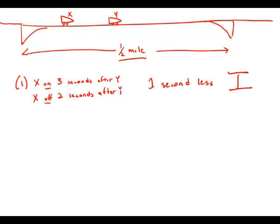Now we're going to move to statement number two. This is a problem where we really have to be careful to completely ignore statement number one and focus only on statement two. Statement two gives us a speed for car Y — Y is going 30 miles per hour. So that means we could figure out the time that Y spent on the bridge. But this prompt gives us no information about car X, so by itself, we can't answer any questions about what happened with car X. By itself, this is also insufficient.